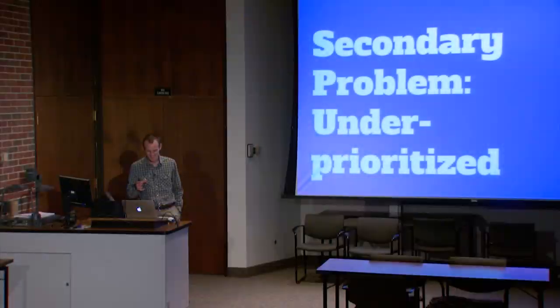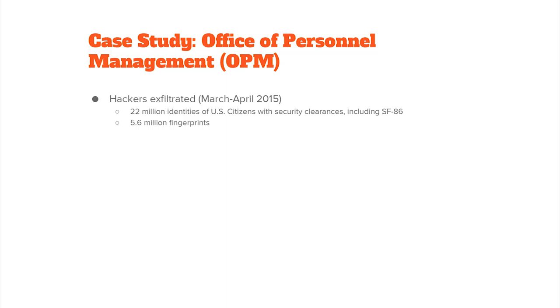A secondary problem — security is often at a lower priority than it ought to be. If you look at the Office of Personnel Management, hackers exfiltrated — which means they stole — between March and April of last year, 22 million identities of US citizens, including their SF-86. The SF-86 is a pretty sensitive document for people who have classified security clearances. Also, 5.6 million fingerprints of those people who have clearances — a huge data breach of highly sensitive data from the United States government.